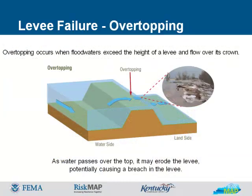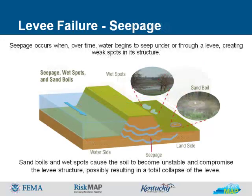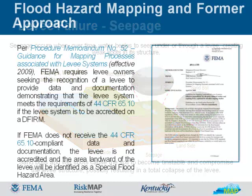Overtopping occurs when floodwaters exceed the height of a levy and flow over its crown. As water passes over the top, it may erode the levy, potentially causing a breach. A levy breach occurs when part of a levy gives way, creating an opening through which floodwaters may pass. A breach may occur gradually or suddenly; the most dangerous breaches happen quickly during periods of high water. Seepage occurs when, over time, water begins to seep under or through a levy, creating weak spots in its structure. Sand boils and wet spots cause the soil to become unstable and compromise the levy structure, possibly resulting in a total collapse.